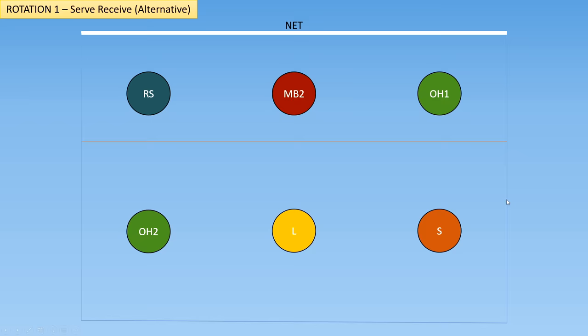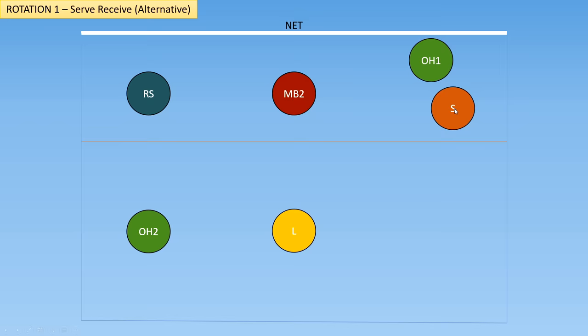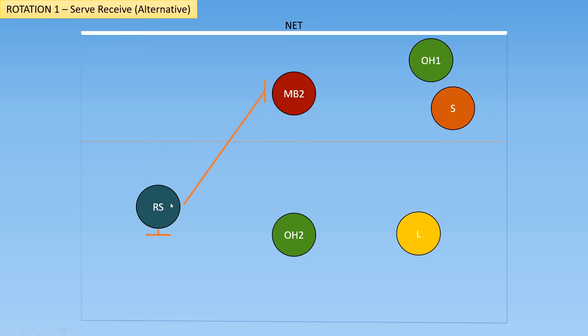One alternative your coach may have you do in this rotation is, instead of having the outside hitter drop back to pass, you'll actually have the setter push up and the right-sided hitter drop back to pass instead. As you can see, this right-sided hitter is still in position, as long as they do not cross to the right of the middle blocker or behind the outside hitter.